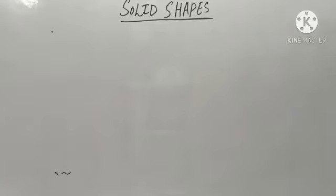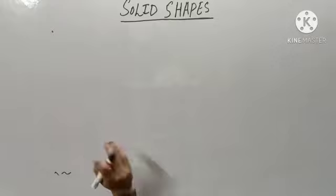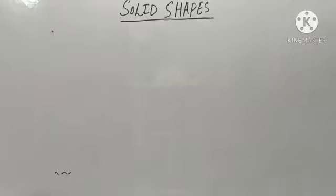Dear students, now I will be explaining you the remaining solid shapes — that is cylinder, cone and sphere. So first of all, cylinder.